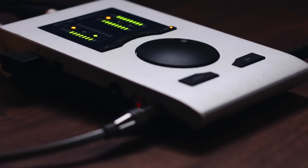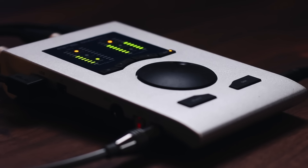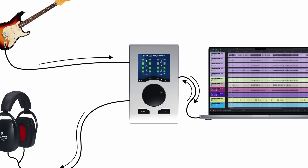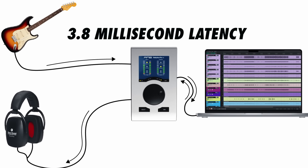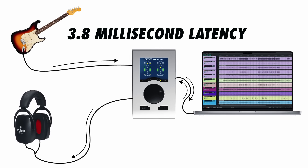The Babyface Pro FS is a USB 2.0 interface, and in my testing it had a round-trip latency of only 3.8 milliseconds. As you get into larger channel counts, you'll start to see other connections like USB 3.0 and Thunderbolt. For anything below about 60 channels, though, USB 2.0 provides plenty of bandwidth. I made a full video about USB vs. Thunderbolt that you can also find linked in the show notes.